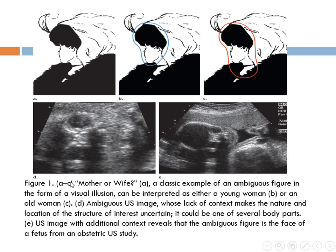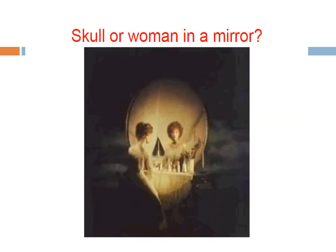We have a very old example: this lady — is it a young or old lady, the mother or the wife? If you see it from one side, it looks like a young lady; from the other side, like an old one. Also, in ultrasound, the first image you don't know what it is, but after additional context you see that this is the head of the fetus. It's like ambiguous features — is this a human in the mirror or is it a skull?